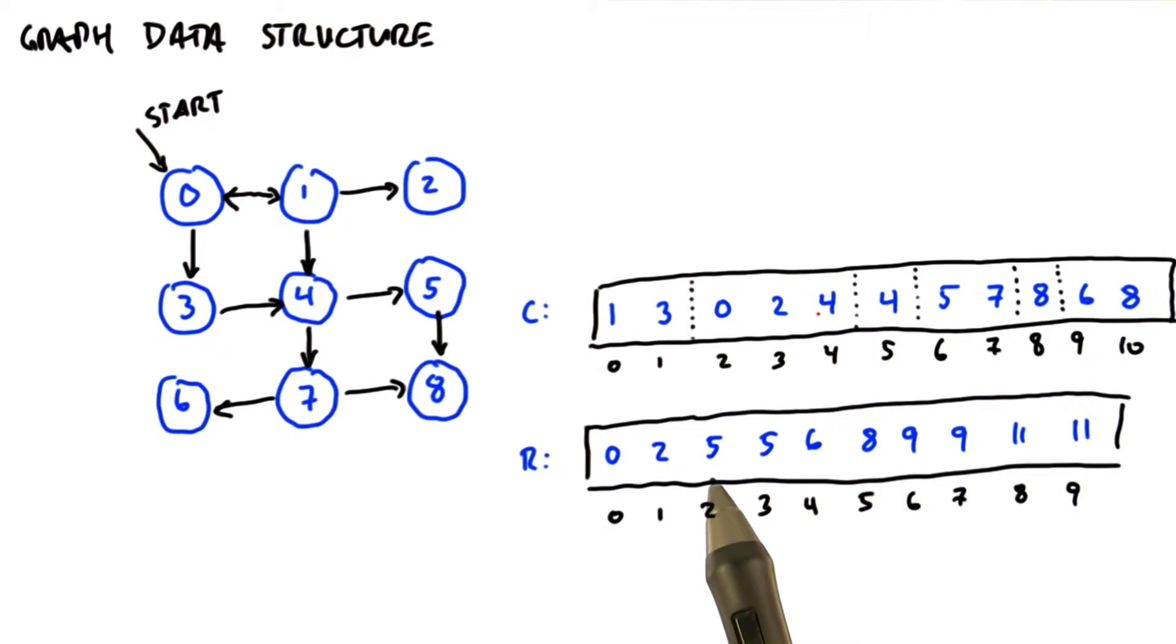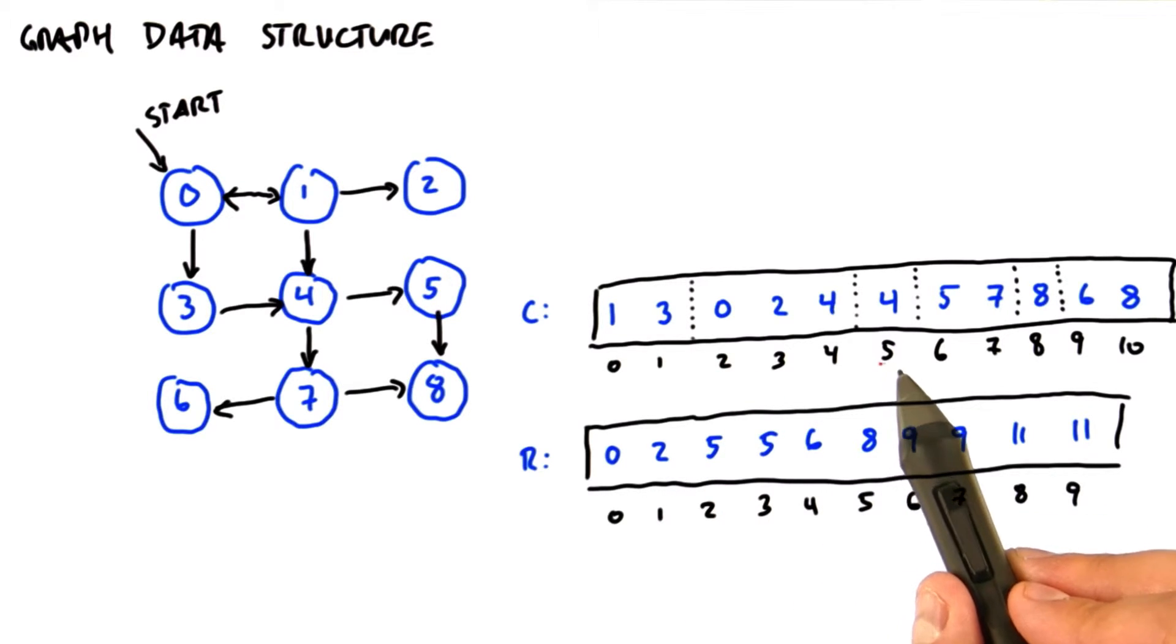The second array, called R, tells us the starting location for each vertex neighbors. Node 0's neighbors start at offset 0. Node 1's neighbors start at offset 2. Node 2's neighbors start at offset 5, and so on.